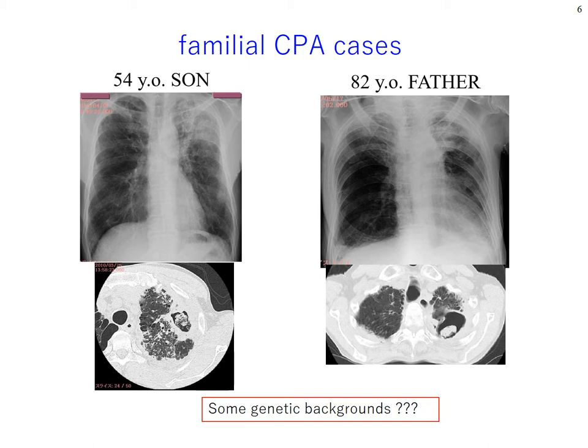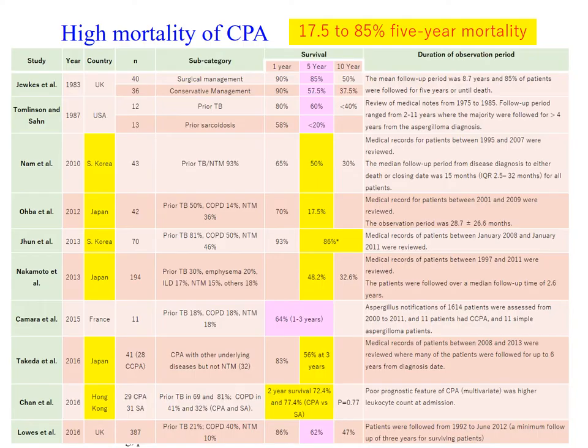Then why do we focus on CPA? Why is CPA a health concern? Because the mortality is high, as well as invasive aspergillosis or some malignant diseases. There are many reports listed here showing 17 to 18% five-year mortality. This is the biggest reason why we perform clinical trials.